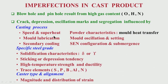In the casting process, speed and superheat are important, powder characteristics and mold lubrication are important, and mold oscillation — its frequency and amplitude — are important. These vary depending on the type of steel being cast. After primary cooling in the mold, secondary cooling below the mold uses either water or air mist. The extent, distribution, and intensity of secondary cooling — how it should taper from top to bottom — are all part of the casting process.